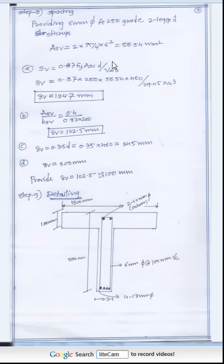It is 2 legs, so 2 pi by 4 into 6 square. Then spacing from another formula: 0.87 fy ASV divided by VUS. So you get another spacing value. And from D you get another value from this relation. There are five relations. With the help of these five relations, you have to determine the minimum.